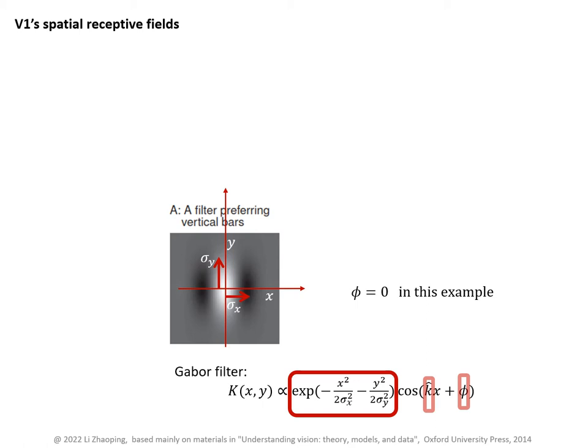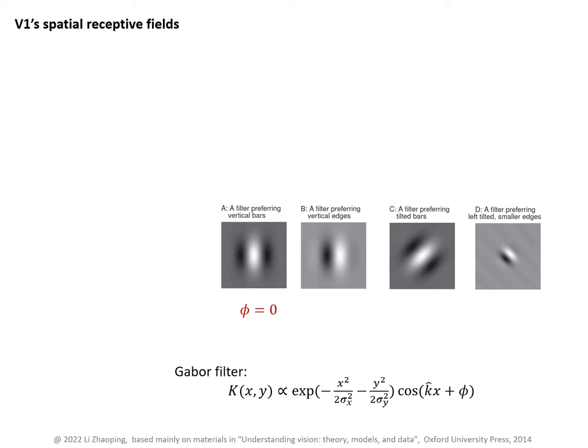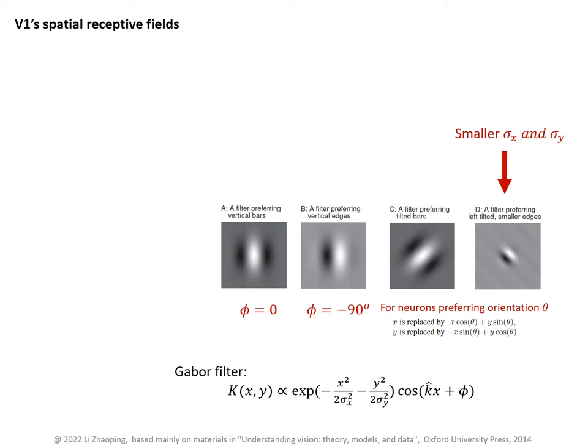When phi equals zero, the center of the receptive field is white, so this neuron prefers a white bar. This one prefers an edge, with phi equal to minus 90 degrees. If a neuron prefers orientation theta, then rotate the coordinate system accordingly. For a small receptive field, we need smaller sigma_x and sigma_y for a smaller Gaussian envelope, and a larger k_hat for a shorter wavelength of the sinusoidal wave within the Gaussian envelope.